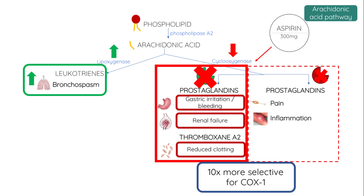Nowadays, we use aspirin as an antiplatelet, and because aspirin is more selective for COX-1, we can use a smaller dose — typically 75mg once a day — to inhibit the production of thromboxane A2 and reduce blood clotting.